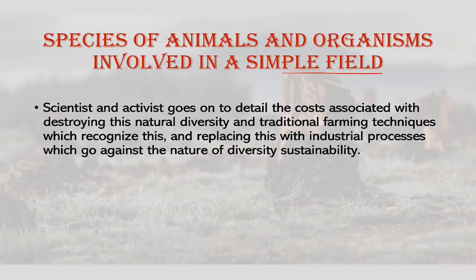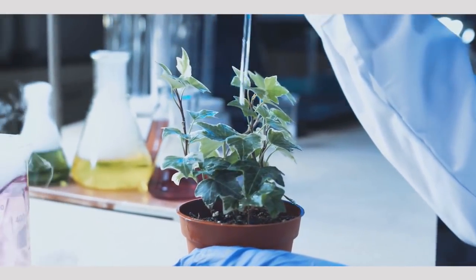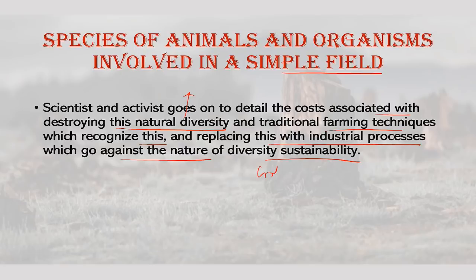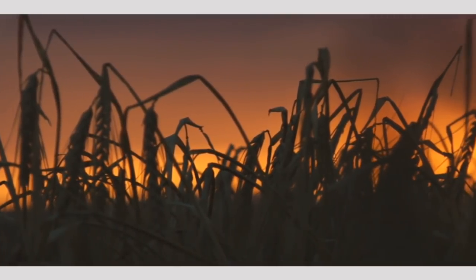Traditional farming techniques recognize this biodiversity and replacing them with industrial processes goes against the nature of diversity and sustainability. For example, crop byproducts feed cattle, cattle waste feeds the soil that nourishes the crops — it is a whole cycle. Crops, as well as yielding grain, also yield straw. This straw provides organic matter and fodder for food sources for humans and animals.